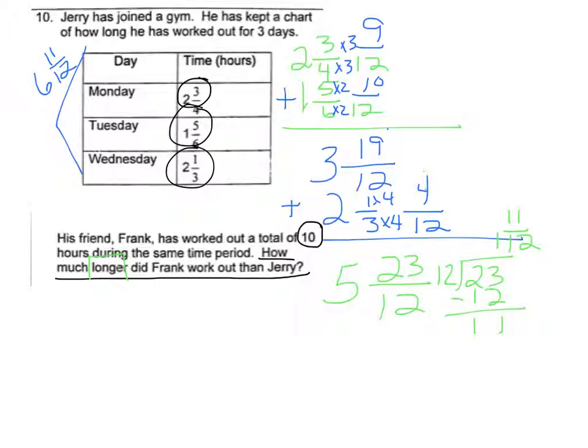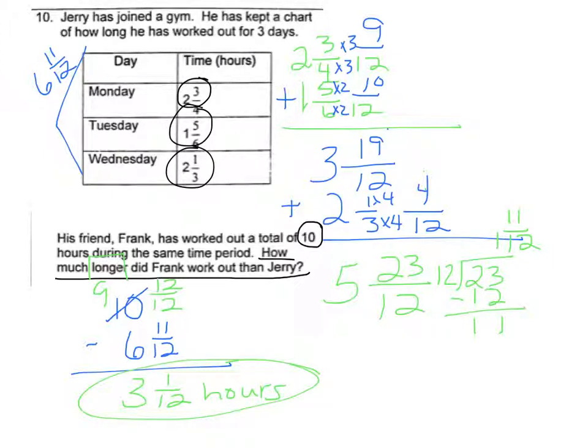Then we need to figure out how much longer Frank worked out. So it tells us that Frank worked out 10 hours, and we're going to want to subtract 6 and 11 twelfths. Can't take 11 twelfths away from nothing, so we have to borrow. This becomes a 9, and we would borrow 12 twelfths because that's one whole. 12 twelfths minus 11 twelfths is one twelfth, and 9 minus 6 is 3. So 3 and one twelfths hours is how much longer he worked out than Jerry.